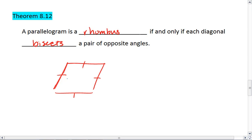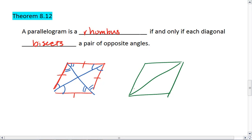Alright, then the diagonals will bisect the angles. Similarly, if we have a figure and the diagonals bisect the angles, then we know it's a rhombus.